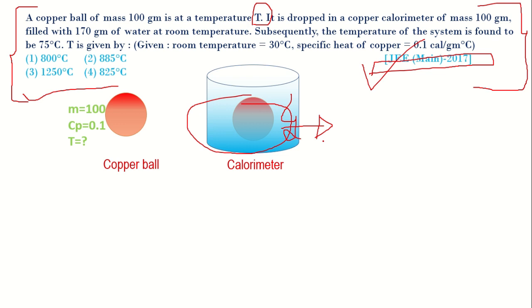Subsequently the temperature of the system is found to be 75 degrees Celsius. Now we have to find out the T, that is the temperature of copper ball at initial.